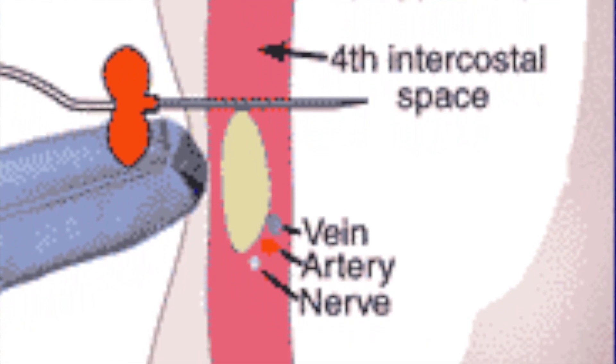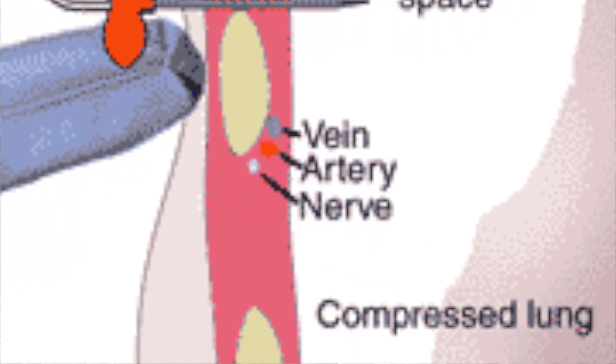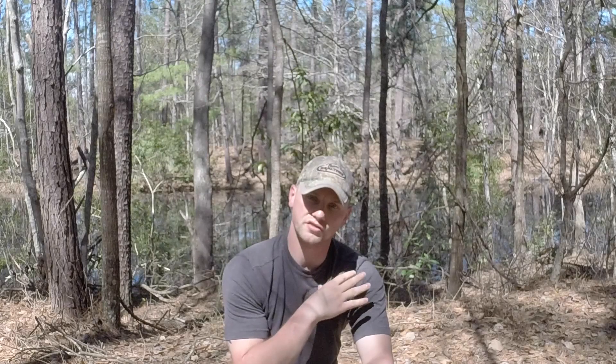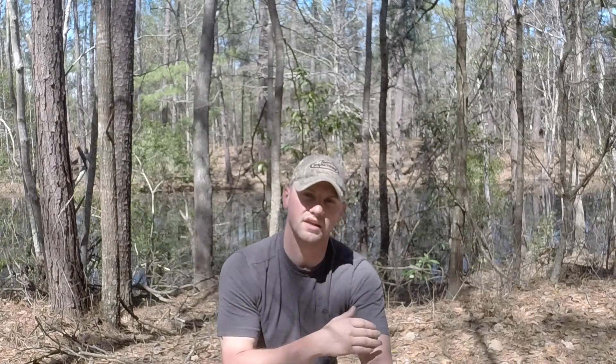The first rib is hidden behind your clavicle, so the second rib will typically be the first one you feel coming down, and the third rib is below that. We come right above the third rib to enter the second intercostal space. The reason we come above the third rib rather than below the second is because underneath those ribs runs a line of nerves, veins, and blood vessels — including an artery — and we don't want to puncture those.